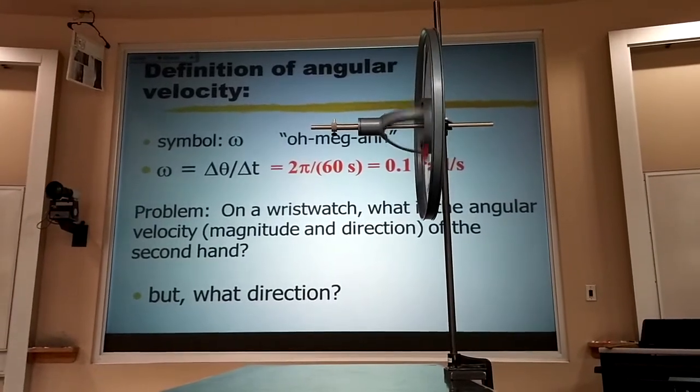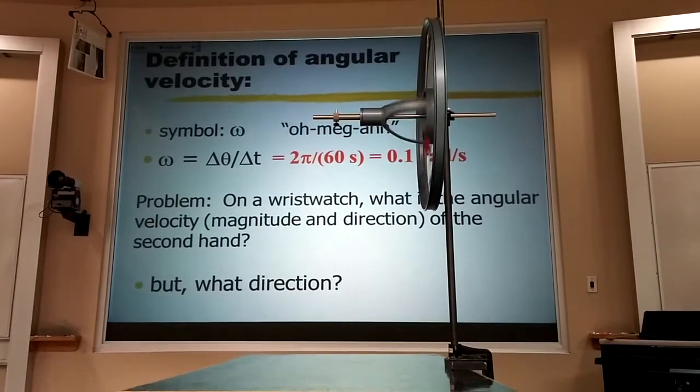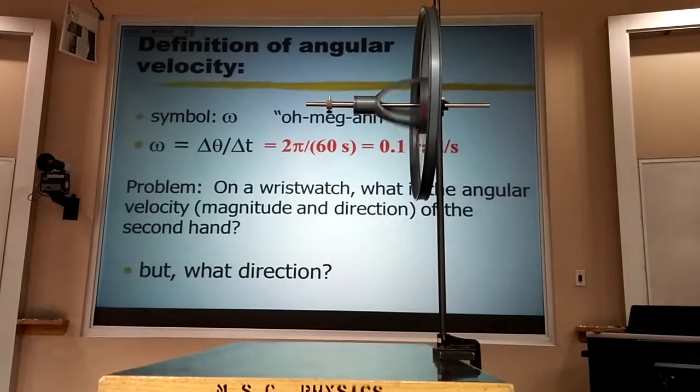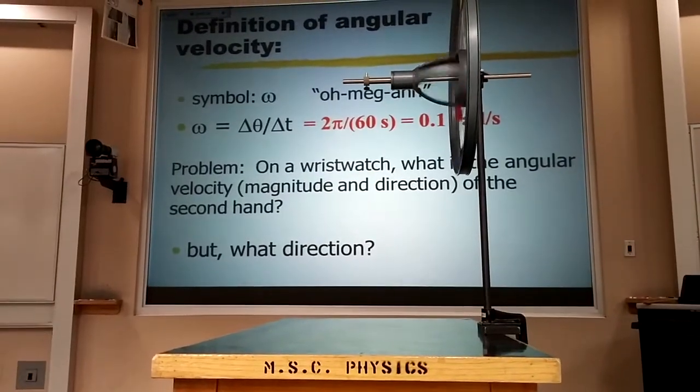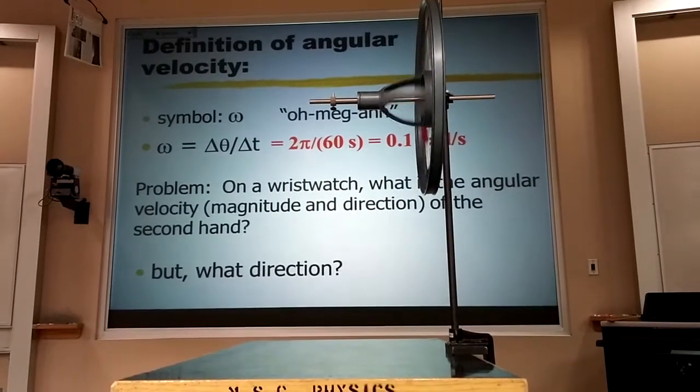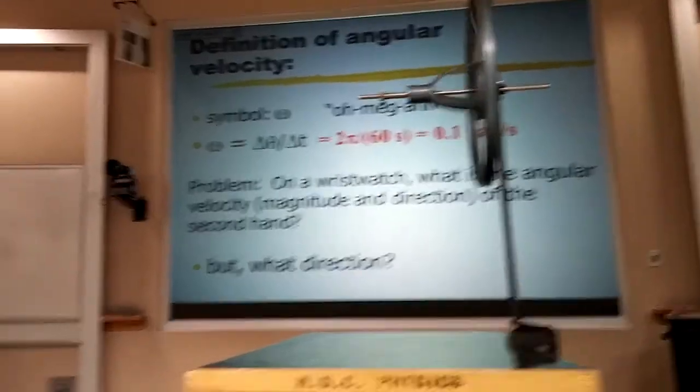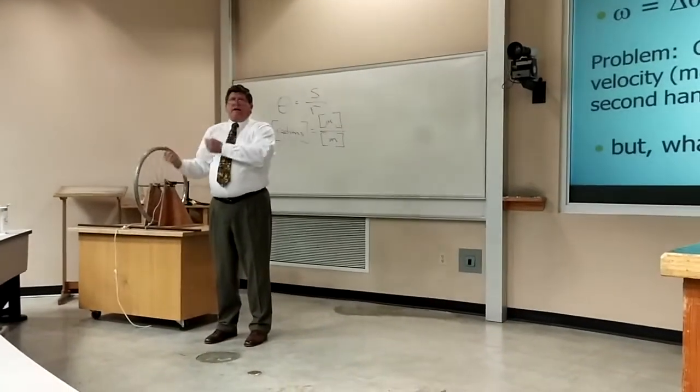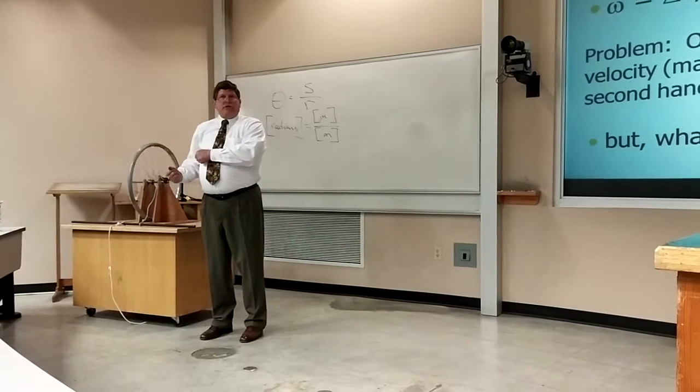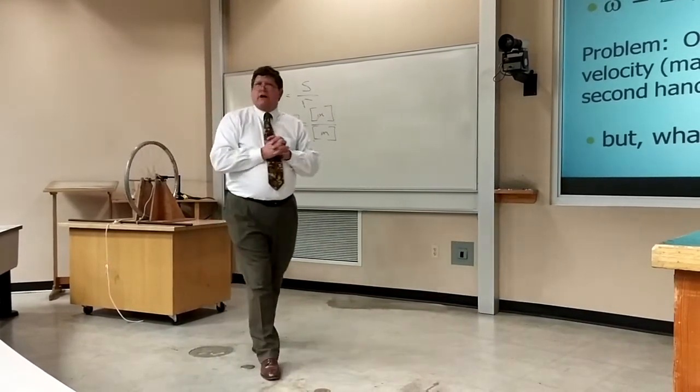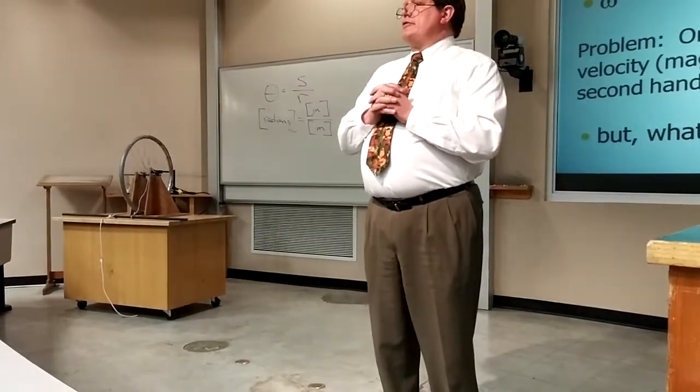Now, it turns out when you're using your wristwatch, you're always on the same side of the wristwatch. But as we saw in this wheel of serious injury, with many problems in rotation, it's impossible to say on the same side of the problem because they're inherently three-dimensional. As this thing was precessing around, we kept on finding ourselves on different sides of the wheel. And so we can't really use clockwise and counterclockwise to describe the direction of this angular velocity.